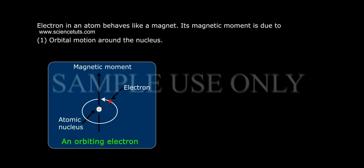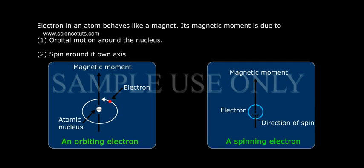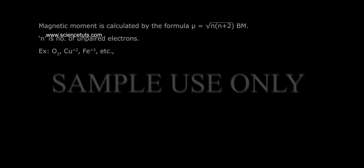Magnetic properties. Electron in an atom behaves like a magnet. Its magnetic moment is due to: 1. Orbital motion around the nucleus, 2. Spin around its own axis.